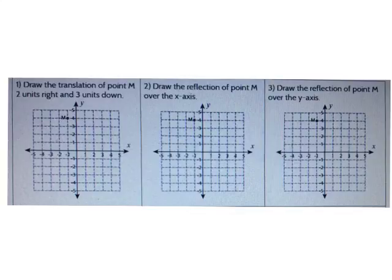Let's start with our do now. Draw the translation of point M two units right and three units down. Go ahead and draw that translation on your paper and then enter the new ordered pair for M' in the blank.